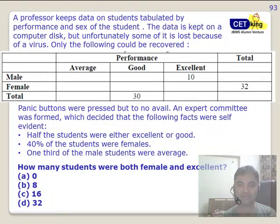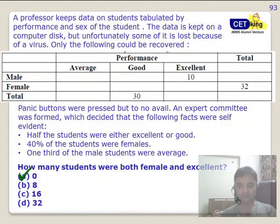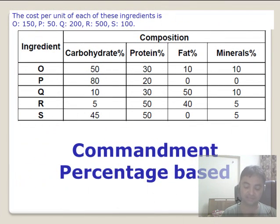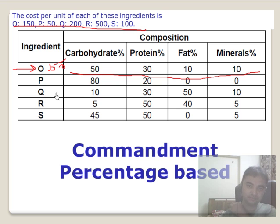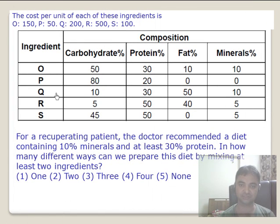Another question from CAT 1993 was also based on forming a table. Another commandment is percentage-based questions. For example, carbohydrates is 50 percent, protein is 30 percent — these are percentage weightages along with costs. Questions ask which option gives maximum or minimum cost. Pause the video and try to solve this question yourself.